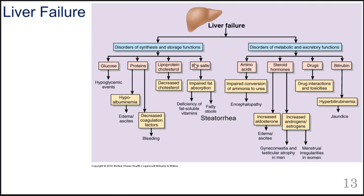The liver produces bile salts that are released into the duodenum, where we are able to properly break down and absorb fat — not only the fat in our food, but also fat-soluble vitamins, which include vitamins A, D, E, and K. If fat is not properly broken down and absorbed, it will pass through the rest of our digestive system to become part of our stool, which can lead to fatty stools. These stools are actually floating, and that is called steatorrhea.